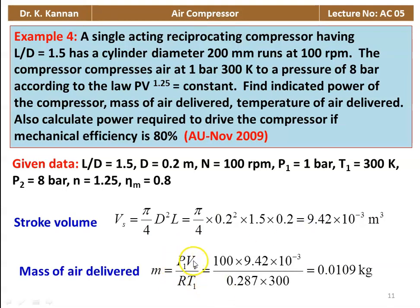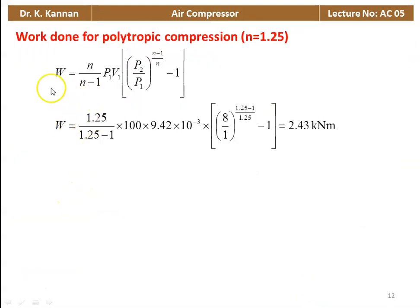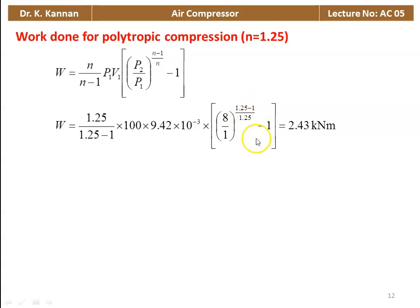Mass of air delivered: m = P1V1 / (R × T1) = (100 × 9.42 × 10⁻³) / (0.287 × 300) = 0.0109 kg per stroke. Work done for polytropic compression (n = 1.25): W = (1.25/0.25) × 100 × 9.42 × 10⁻³ × [(8/1)^(0.25/1.25) - 1] = 2.43 kN·m.